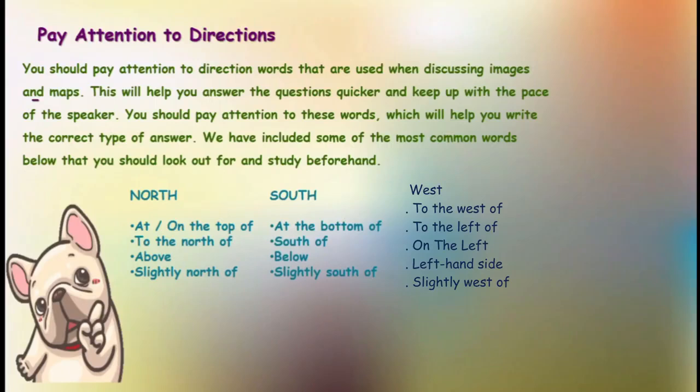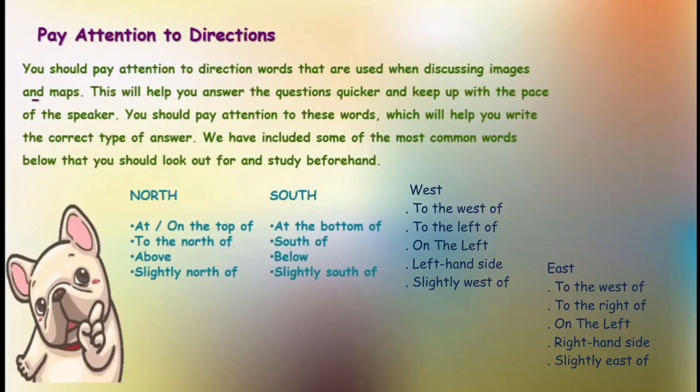Moving to west: 'to the west of,' 'to the left of,' 'on the left of,' 'left hand side,' or 'slightly west of.' And for east: 'to the east of,' 'to the right of,' 'on the right,' 'right hand side,' or 'slightly east of.' So these were some of the words you can hear in your recorded audio. Accordingly, you will know in which direction you have to go.